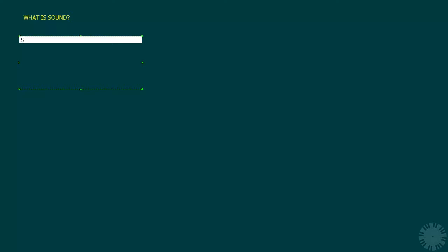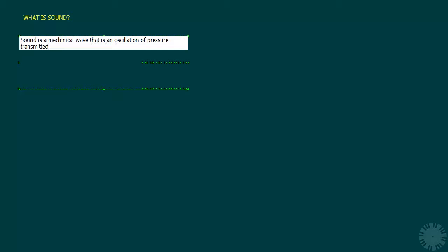Now let's see what the formal definition of sound says. According to Wikipedia, sound is a mechanical wave — that is, an oscillation of pressure transmitted through some medium like air or water, composed of frequencies within the range of hearing.